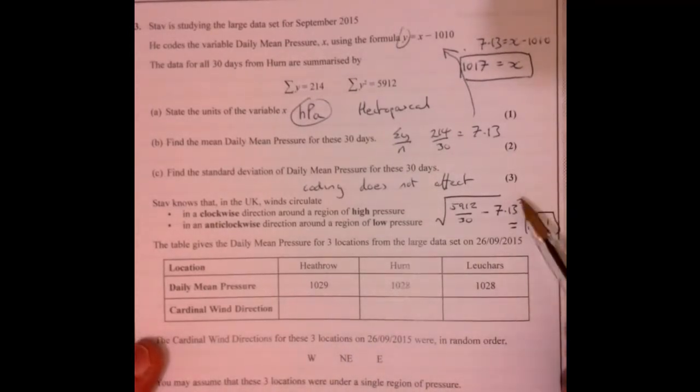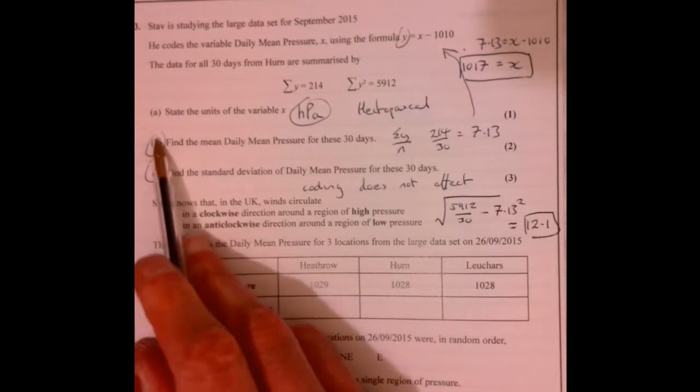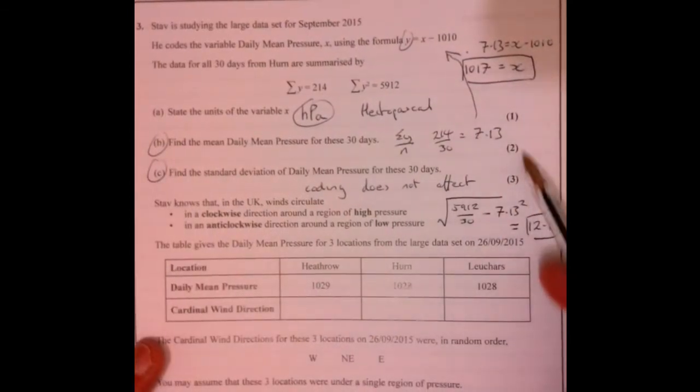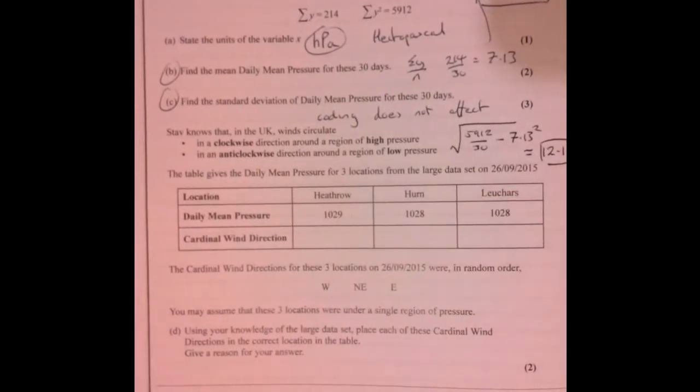Okay, next bit of the question. Again, you need knowledge of the data set. You can see these two bits you don't really need to know anything about the data set, you've got five marks. To be honest, that's quite an easy five marks. The last part though is a little trickier.